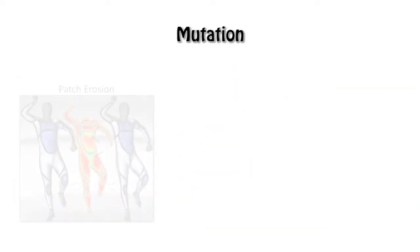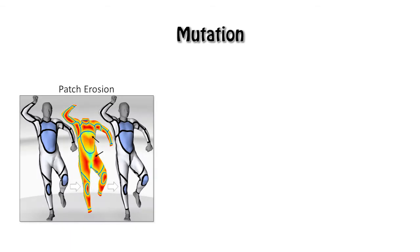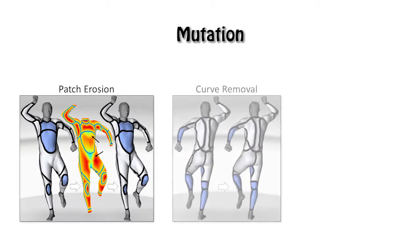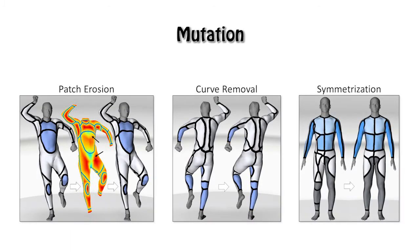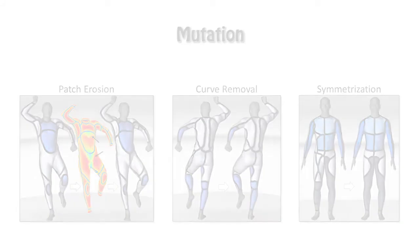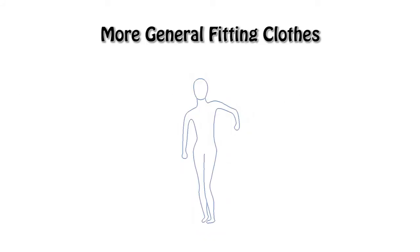Beside the crossover operator, a set of mutation operators is developed. They are patch erosion, curve removal, and symmetrization. Patch erosion and symmetrization are done on the design field, while curve removal is done on styling curves. Our evolution framework can also be extended to more general garments.